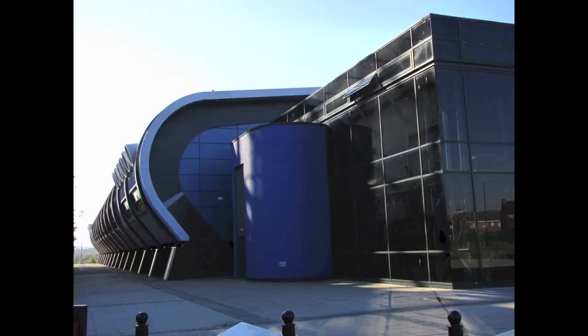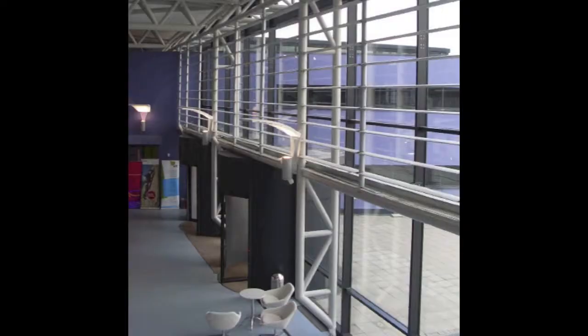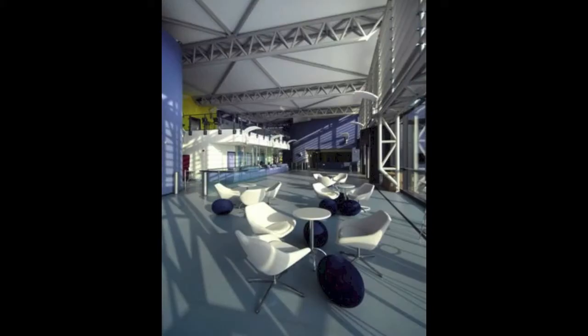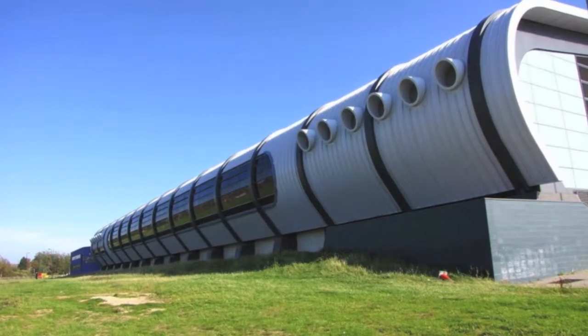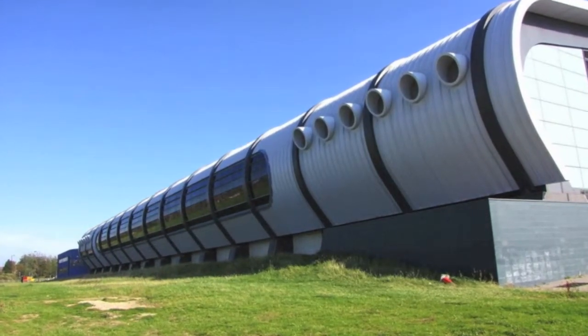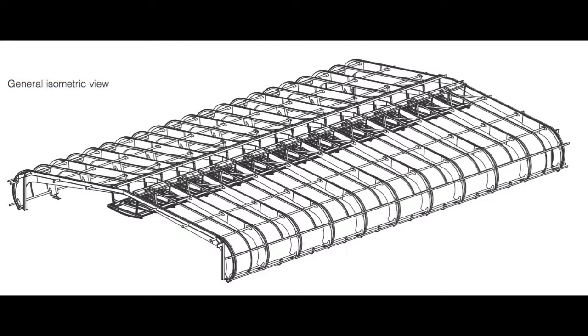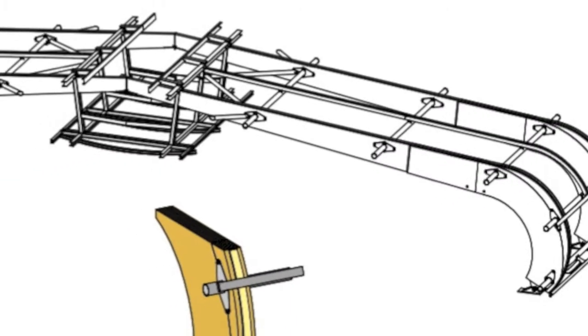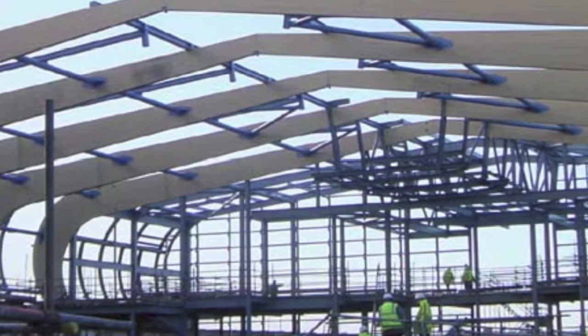El segundo módulo, de forma cuadrada, usa un sistema portante de cerchas y sus fachadas son en vidrio. Y el último módulo de las piscinas, sobre el cual haremos énfasis, tiene un sistema portante compuesto por unos 11 marcos de madera laminada unidos por unas viguetas de acero o empalmes ancladas a estos y unos marcos de acero entre los marcos de madera.